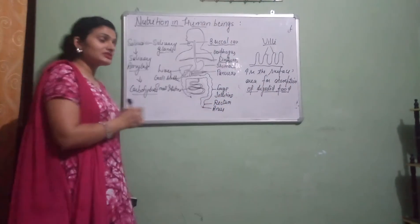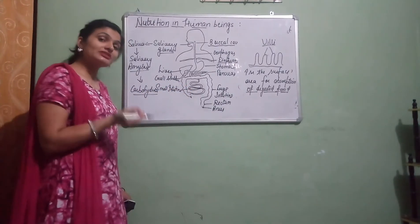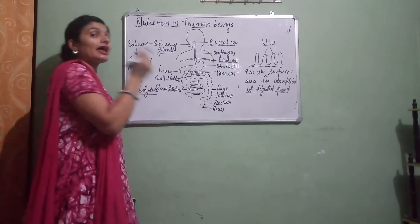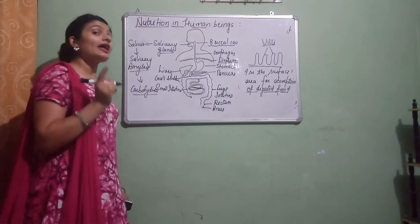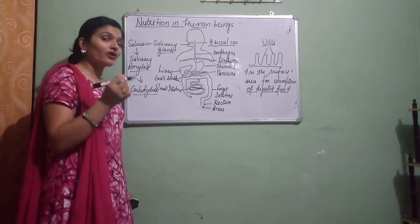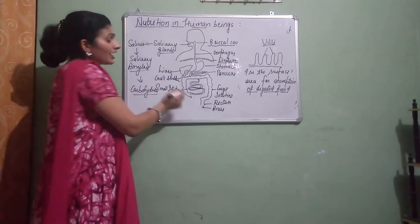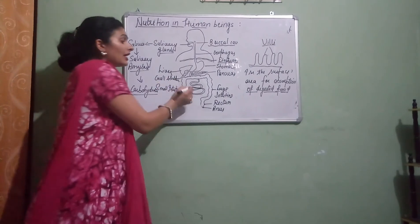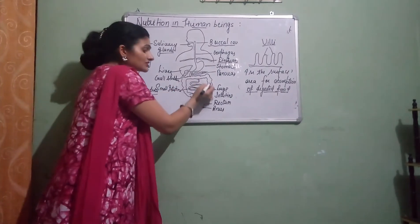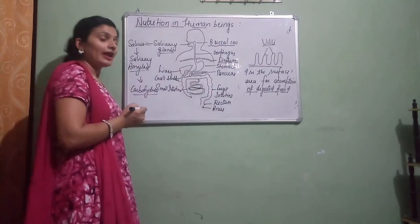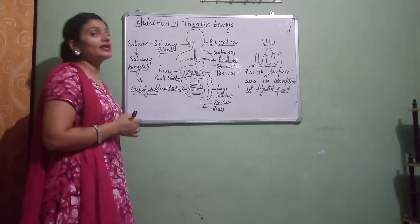After absorption of digested food, the food goes to the blood and releases energy with the help of a process called respiration. That energy is used for growth and repair of the body — that process is called assimilation. After that, undigested food goes to the large intestine, where excess water and minerals are absorbed. The remaining undigested food goes to the rectum and anus, and that is called egestion.